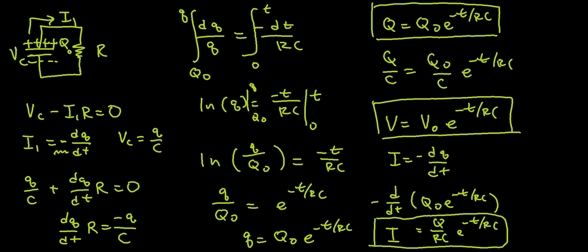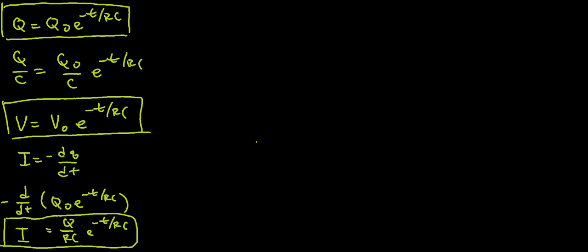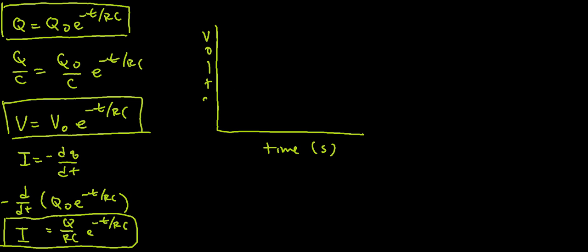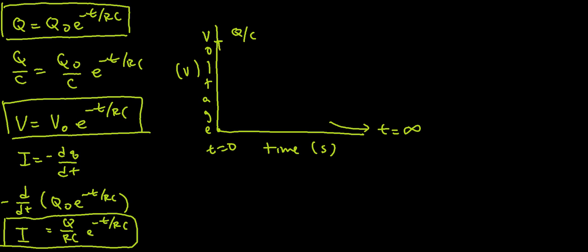The AP will ask you to draw a graph, so this time I'm going to graph voltage versus time. At t approaches infinity, I've completely discharged my capacitor, so I'm approaching zero voltage. At t equals 0, we have the maximum voltage, which is Q over C — big Q over C — because we start out with the maximum charge Q. The graph shows an exponential decrease.